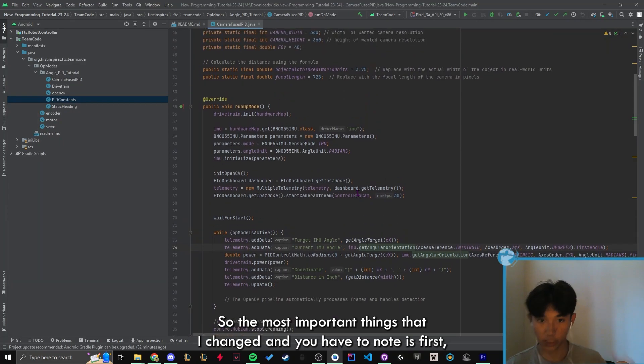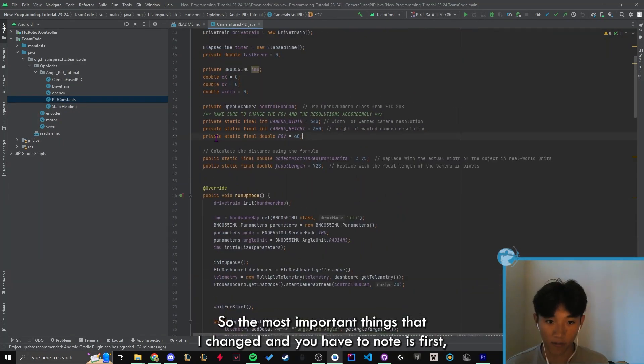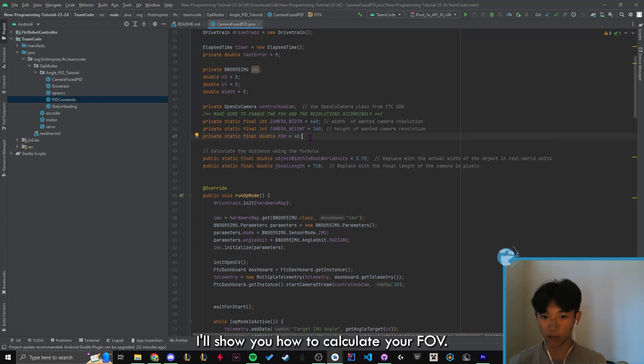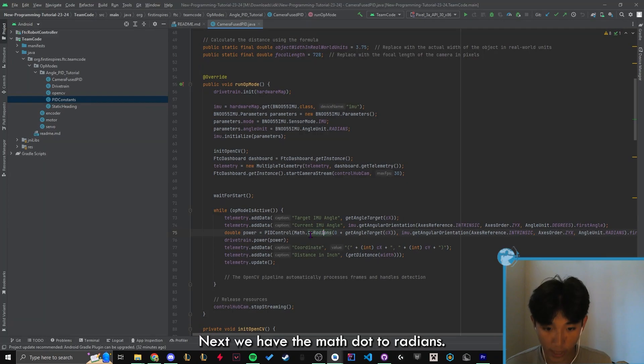So the most important things that I changed and you have to know is first there's this FOV variable. I'll show you how to calculate your FOV. This is very important. Next we have the Math.toRadians, so this is basically calculating the exact angle we need to get to and I'll show you that.